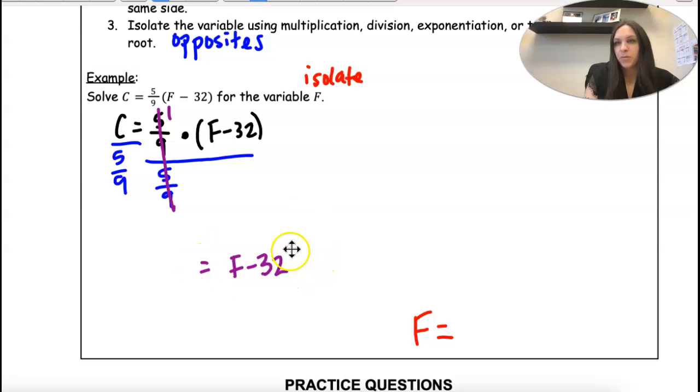And I'm going to drop the parentheses because we're not multiplying anymore. Okay, so let's take a look at this. C divided by 5 ninths. That is a fraction when we divide. We can't have that. So what we do is we use what we know.